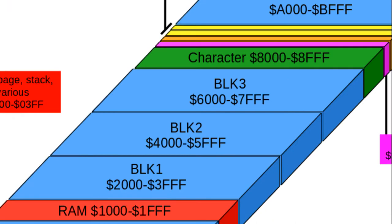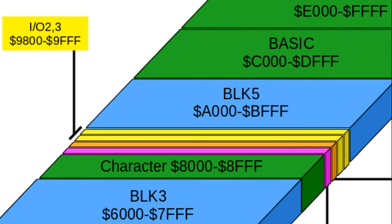Block 1 to Block 3 contained 8K expansion blocks. Block 4 contains the character ROMs, the IO block for the VIC chip and the two VIA chips, the color RAM, and the expansion port IO 2 and IO 3.